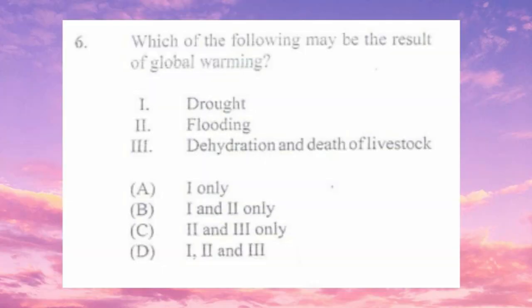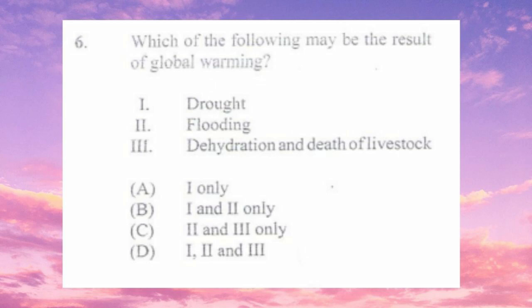Question number six: which of the following may be the result of global warming? One) drought, two) flooding, three) dehydration and death of livestock. The answer is d) one, two, and three. Global warming is the rise in the earth's temperature, normally caused by excess gases such as carbon dioxide that trap heat on the earth.